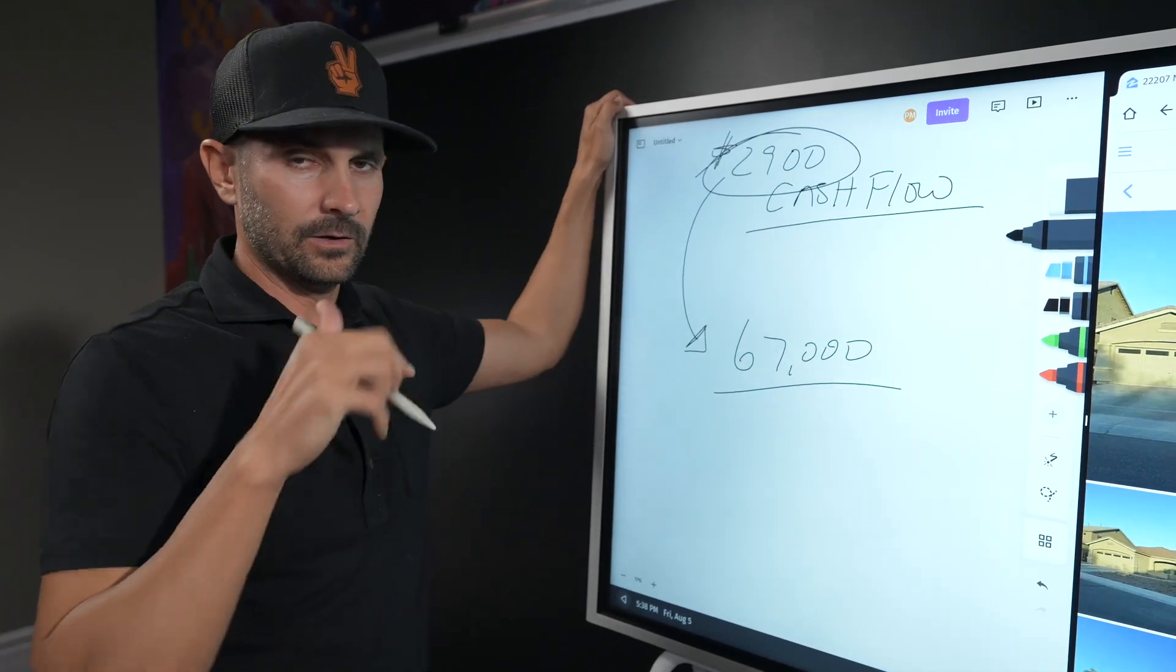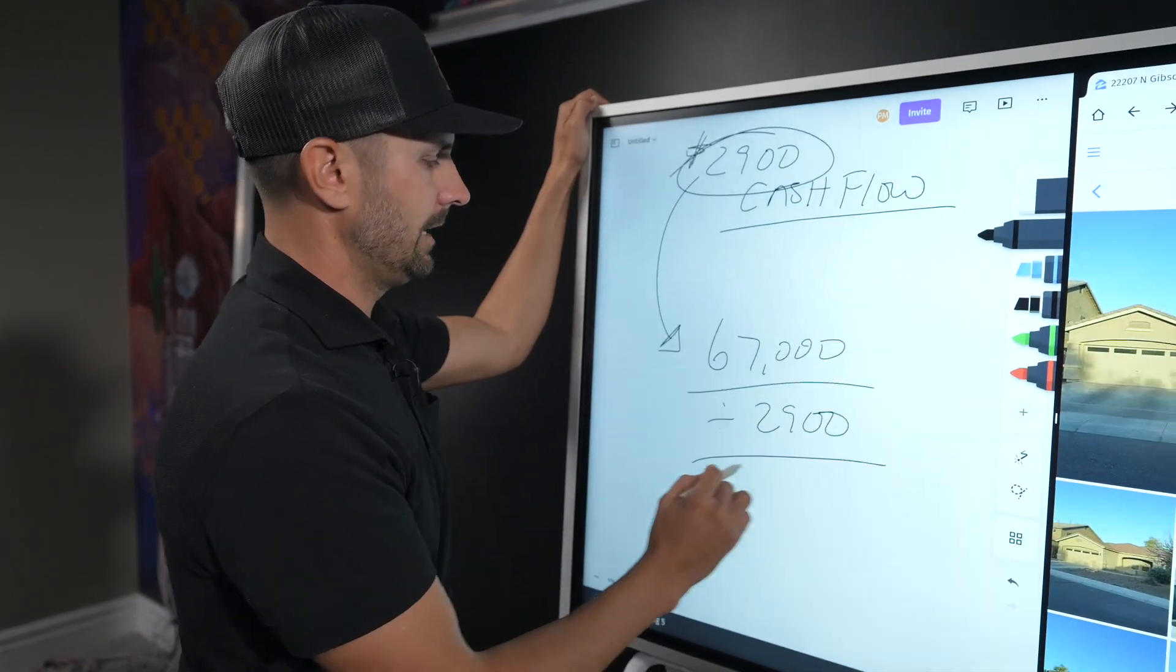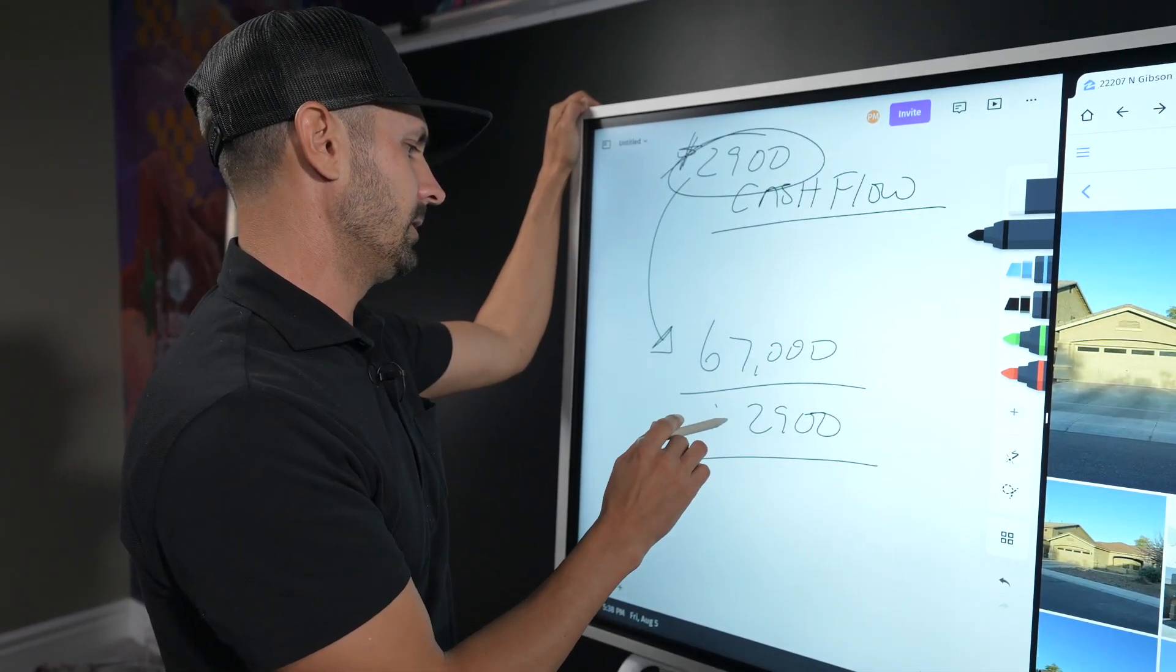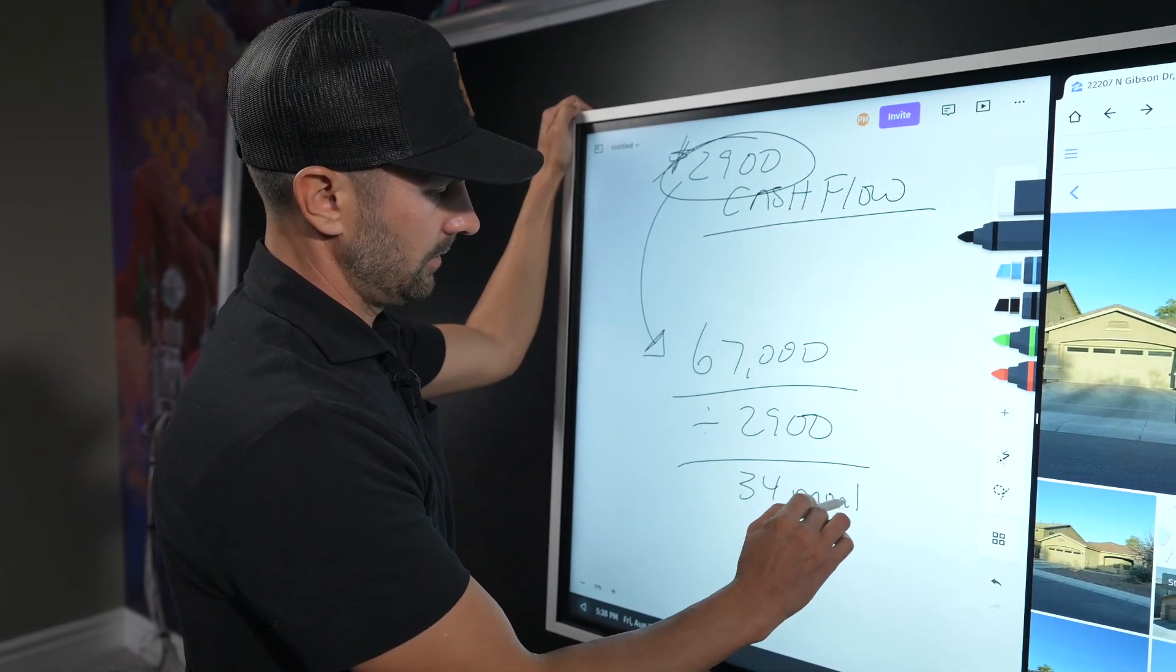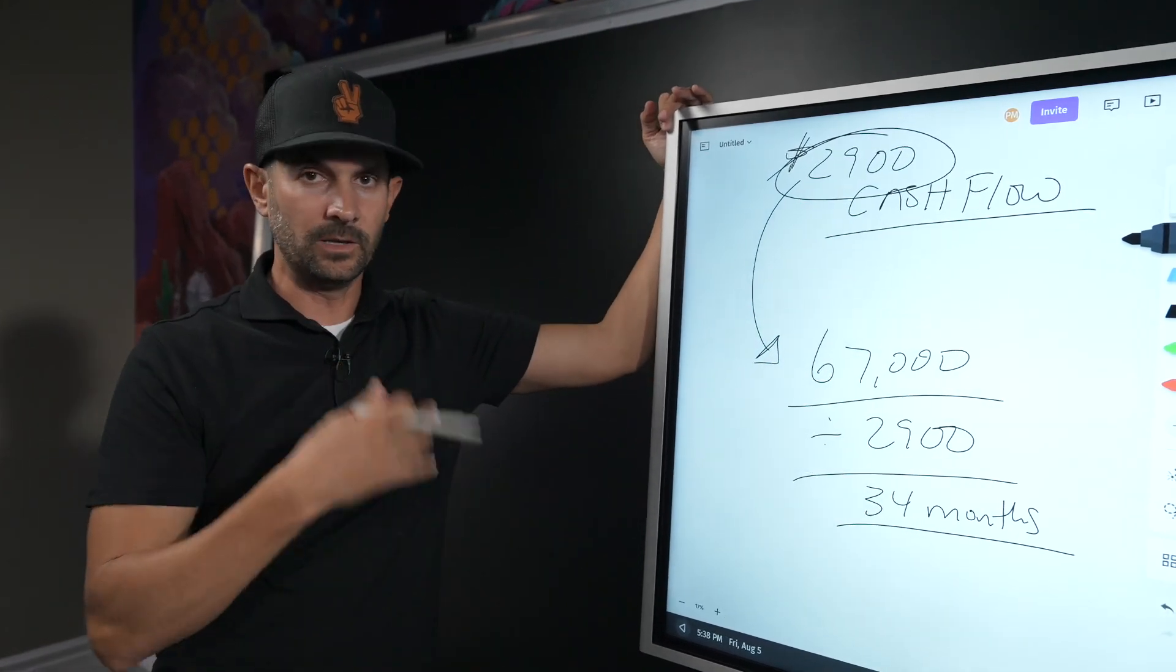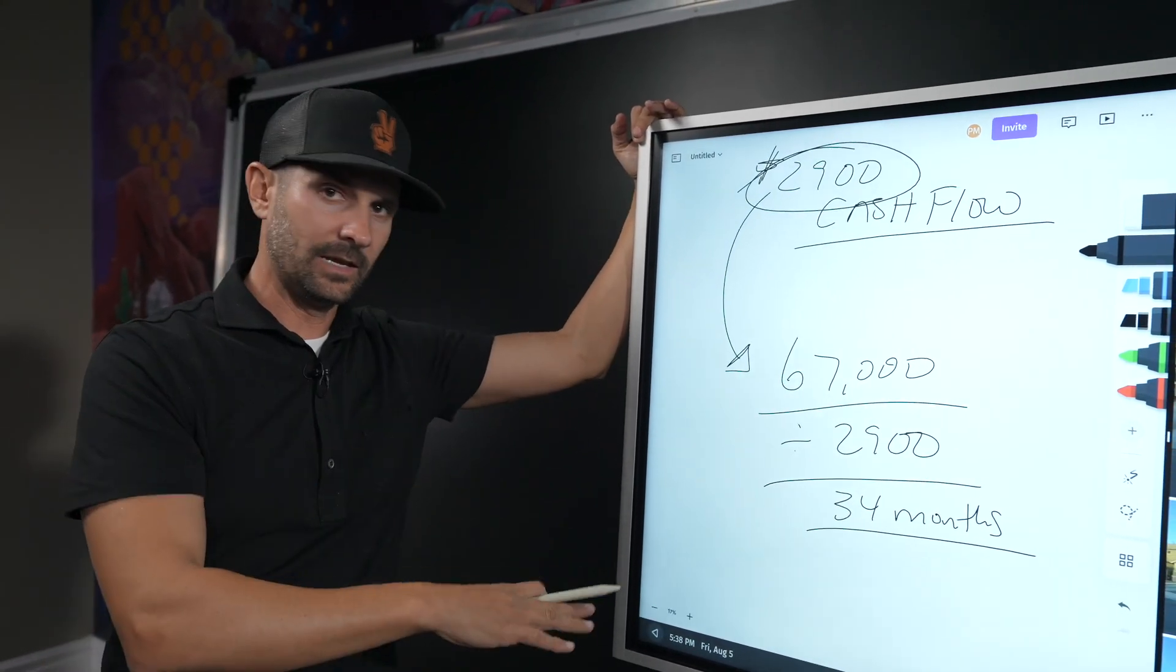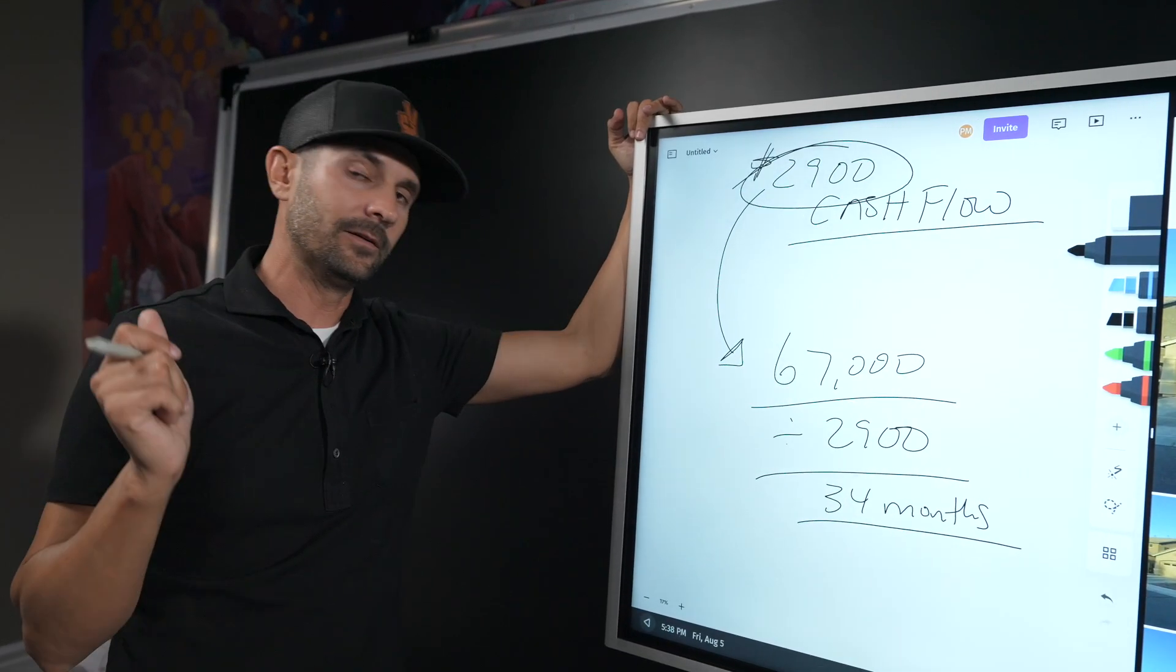And now you own a property that has a lot of equity, has a ton of cash flow, and now that gets rid of that payment and you can move that private money lender to another deal. So $67,000 divided by $2,900, that looks like it would be probably 34 months. Okay, I'm guessing. So in basically a three-year time frame of making this payment and collecting rent and paying down the mortgage, you would have no private money lender. The private money lender would be completely paid off.